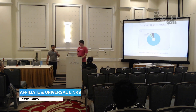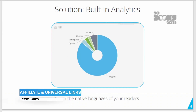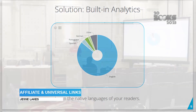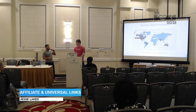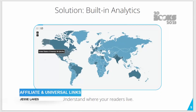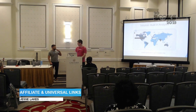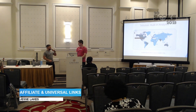You can also gain insight into the preferred language of your audience. English may be number one, but a decent portion might speak Spanish, Portuguese, or German — which could inform decisions about book translation. Finally, you can look at a world map to see where your audience lives. This can help you decide whether to run ads in Canada, Australia, the United Kingdom, or other countries.